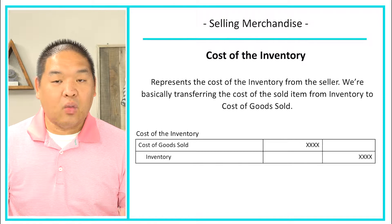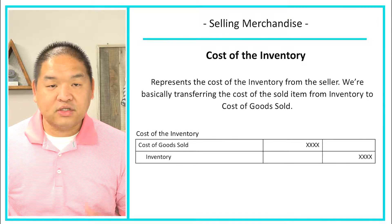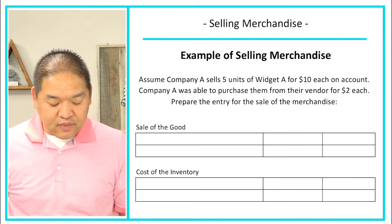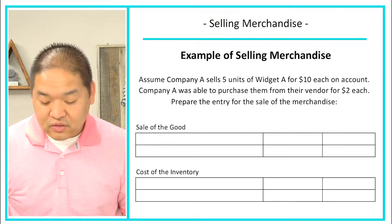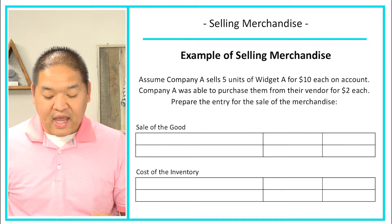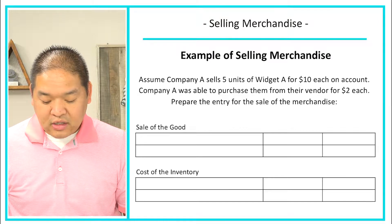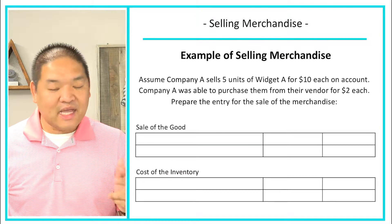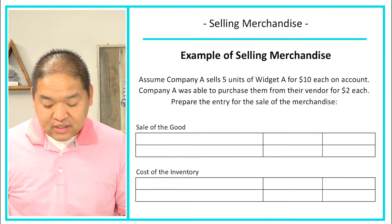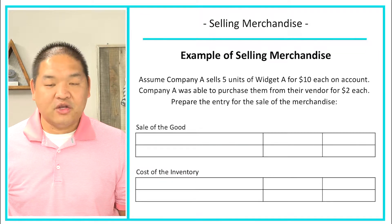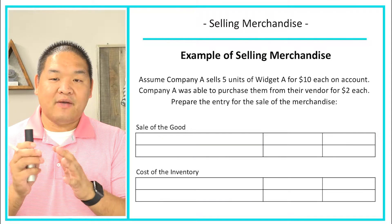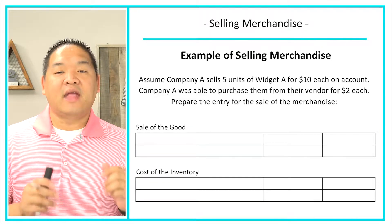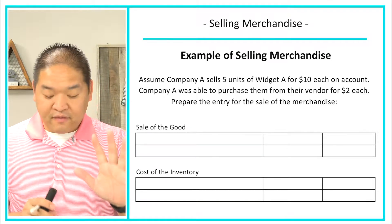Let's look at an example. Company A sells five units of Widget A for $10 each to their customer. Company A purchased these products from their vendor at $2 each — so they bought for $2 and flipped it for $10, selling five of them. Prepare the entry for the sale of the merchandise.